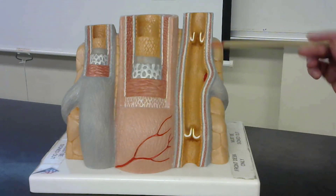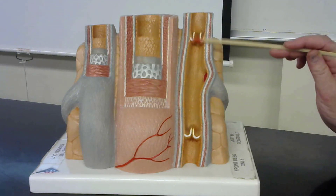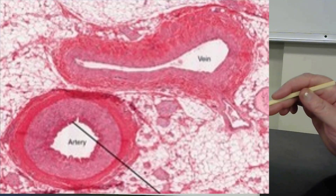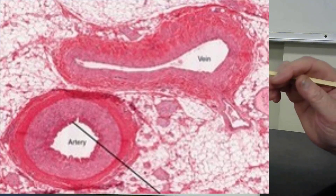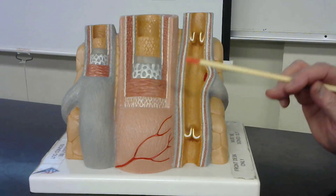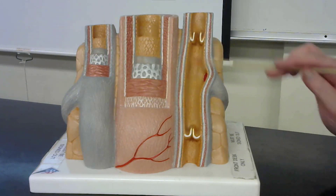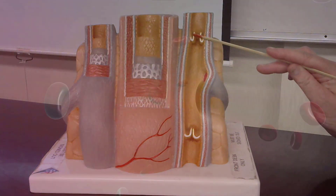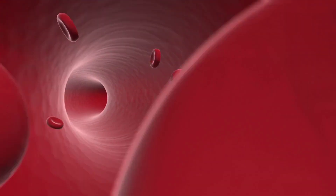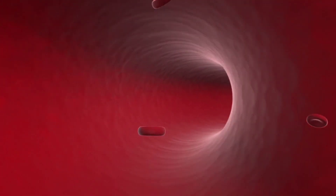Another thing to note is that arteries will not have any valves. Arteries have thicker walls because they need to withstand higher blood pressure, as they are closer to the heart. Veins, on the other hand, are further away from the heart and have low blood pressure, so they have thinner walls, and they also have valves to prevent the backflow of this low-pressure blood. Not all veins will have these one-way valves — veins that are going against gravity, such as veins found in the arms and legs, will often have these one-way valves.